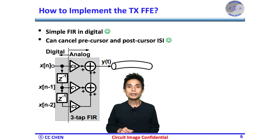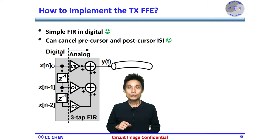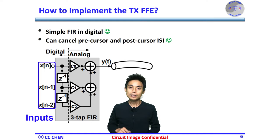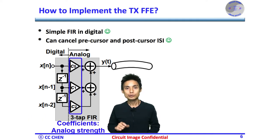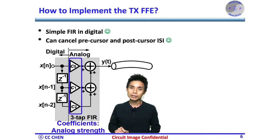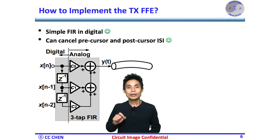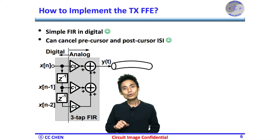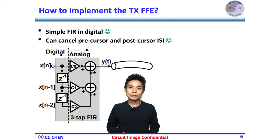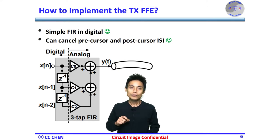After understanding the preference for FFE at the TX, let's go over how the TX FFE is realized. The three-tap FIR shows a digital delay with flip-flops, and each delayed version — X of n, X of n-1, X of n-2 — drives the analog circuitry with a corresponding strength given by coefficients C1, C2, C3. As mentioned, the coefficients must support both positive and negative values. The sign of the coefficient can be achieved easily by applying inversion of the input signal. Furthermore, like the CTLE, the TX FFE can cancel both pre-cursor and post-cursor ISI.